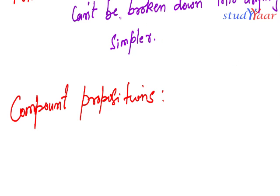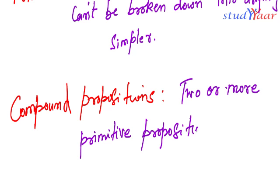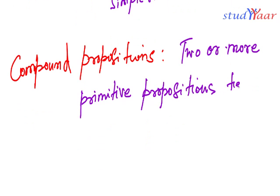Compound propositions are two or more primitive propositions tied together with a connective. We are going to see what a connective is.